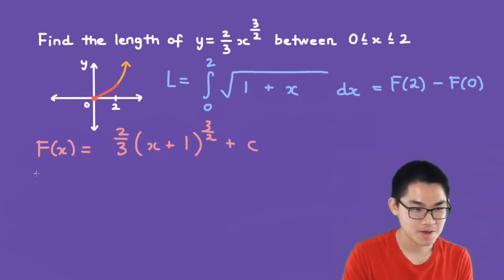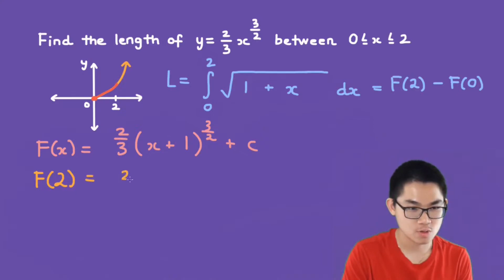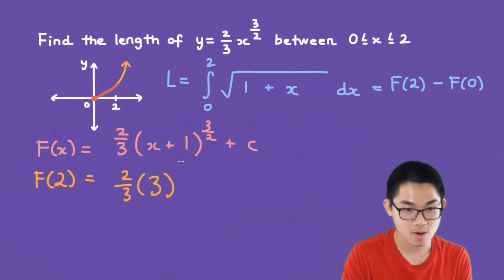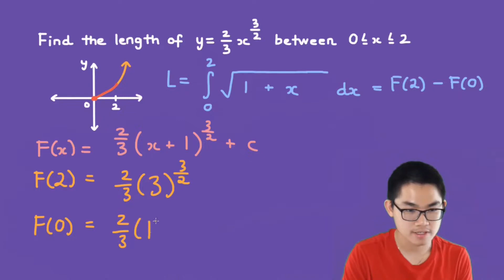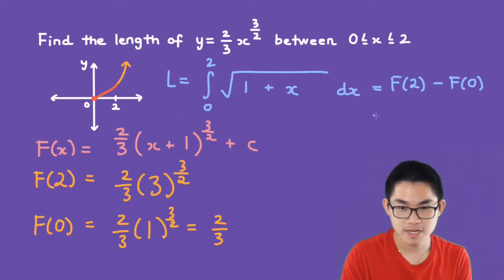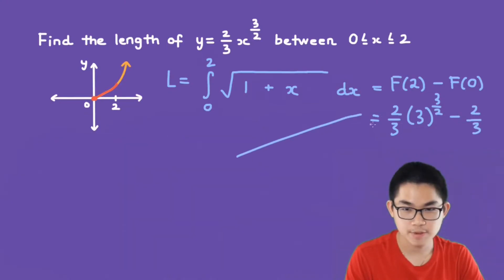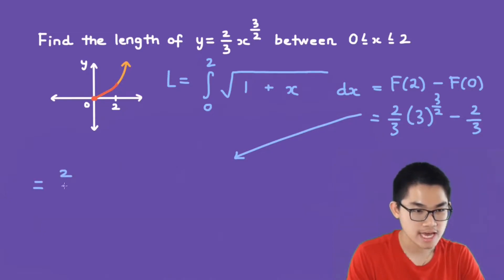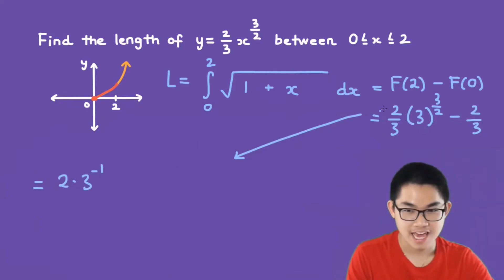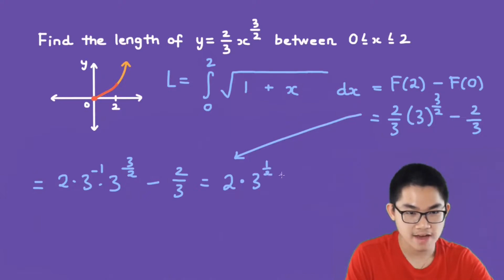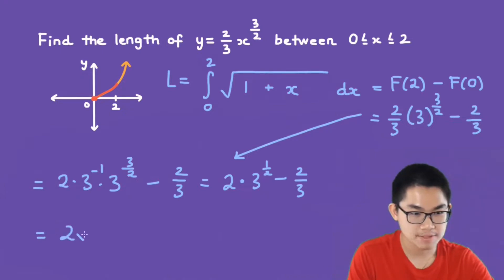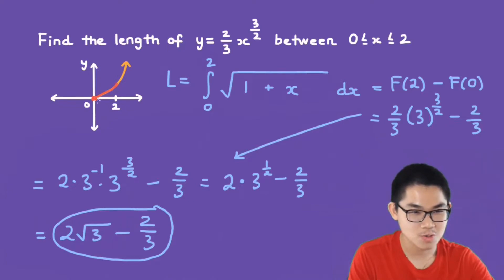Now let's find F(2) and F(0). F(2): substitute x with 2, giving 2 over 3 times 3 to the power of 3 over 2. F(0): 2 over 3 times 1 to the power of 3 over 2, which is 2 over 3. So F(2) minus F(0) equals 2 over 3 times 3 to the power of 3 over 2 minus 2 over 3. Simplifying: 2 over 3 is 2 times 3 to the power of negative 1, times 3 to the power of 3 over 2, giving 2 times 3 to the power of 1 half, which is 2 times the square root of 3 minus 2 over 3. This matches the textbook answer — the length from 0 to 2 of the orange part.